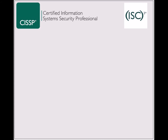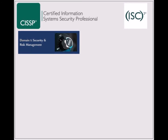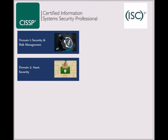Information security topics are covered in eight domains in CISSP as follows. The first domain is called Security and Risk Management, and covers topics of security governance, business continuity, compliance, and security training. The second domain is called Asset Security, and includes topics related to asset classification and data protection.